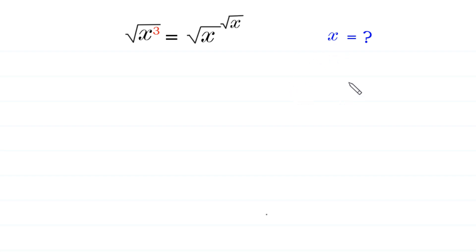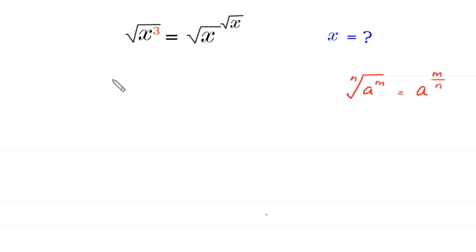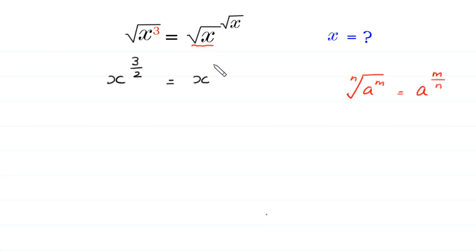According to this property of exponents, the nth root of a to the power m is equal to a to the power m over n. We can write square root of x cubed as x to the power 3 over 2. Similarly, we can write the square root of x as x to the power 1 over 2, raised to the power square root of x.